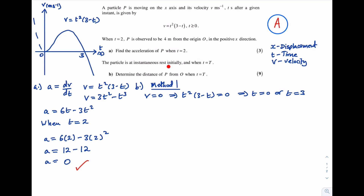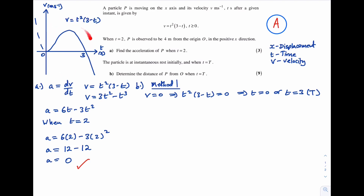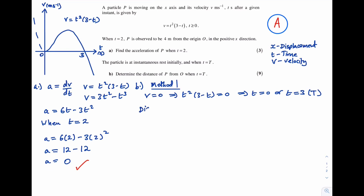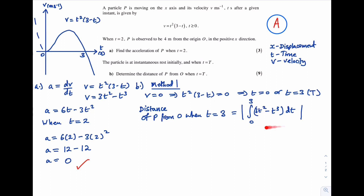We are told the particle is instantaneously at rest initially (t = 0) and when t = T, so T = 3. The area under a velocity-time graph represents displacement, and distance is the absolute value of displacement. To find the distance of p from O when t = T = 3, we take the absolute value of the integral from 0 to 3 of the velocity — which is this area on the graph.